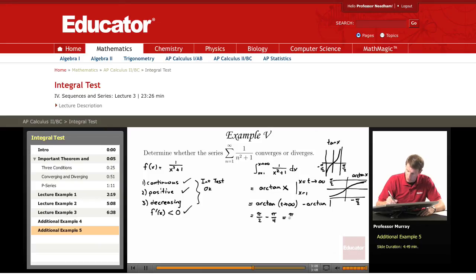So this integral, this improper integral, converges to pi over 4. What that tells us is that the series 1 over n squared plus 1 converges by the integral test.